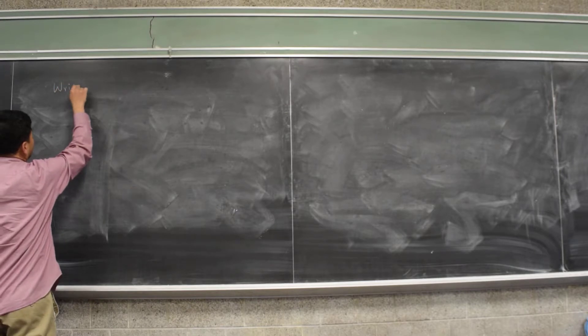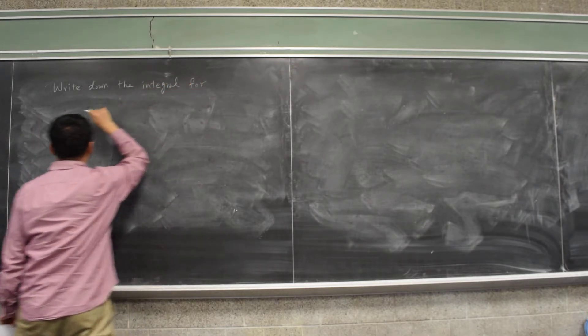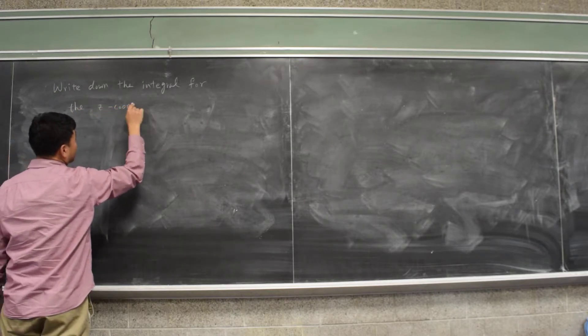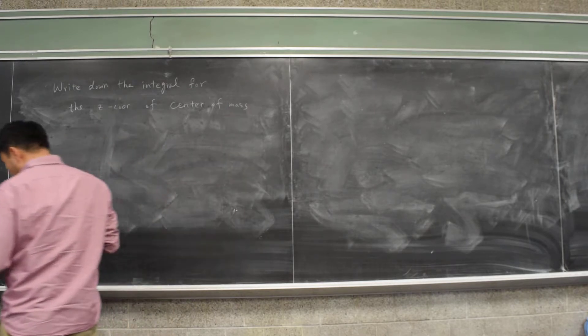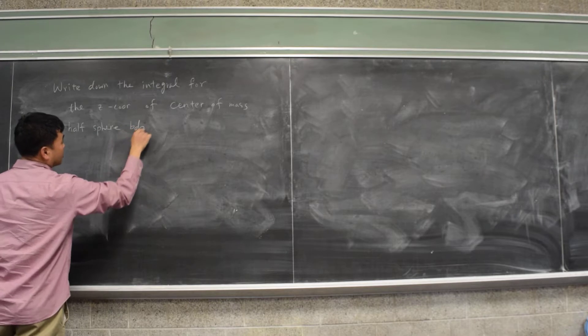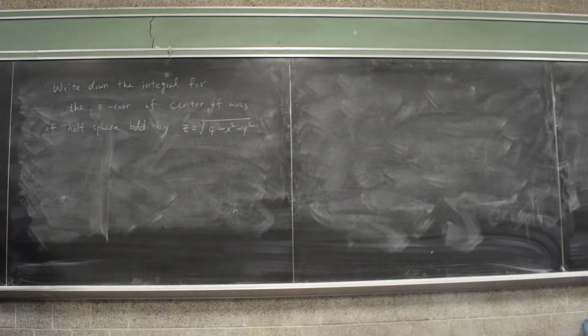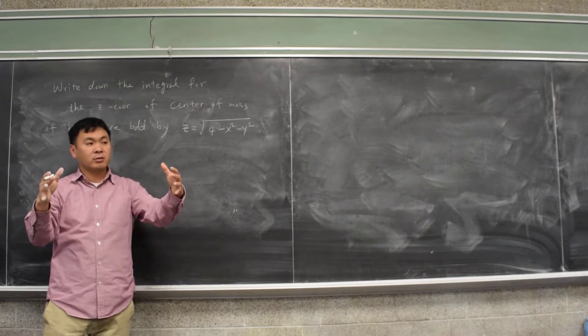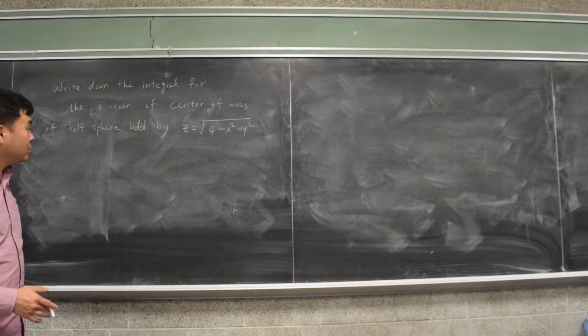Okay, write down the integral for the z coordinate of the center of mass of the half sphere bounded by z equal to square root of 4 minus x squared minus y squared. Because the sphere's center of mass is located on the z axis, I know that the x and y coordinates of the center of mass is zero, so you just need a z coordinate.